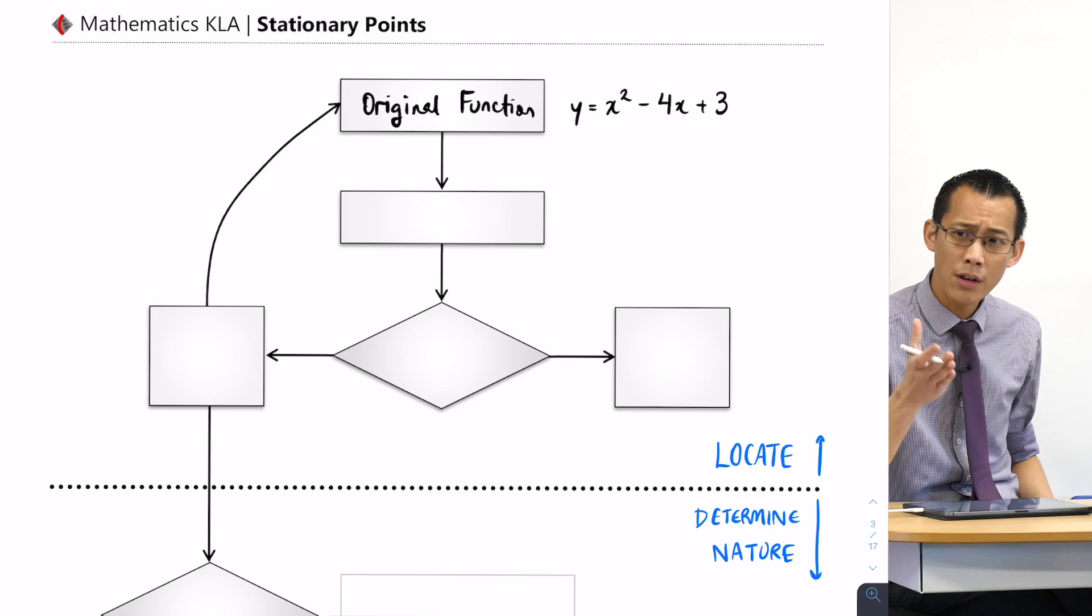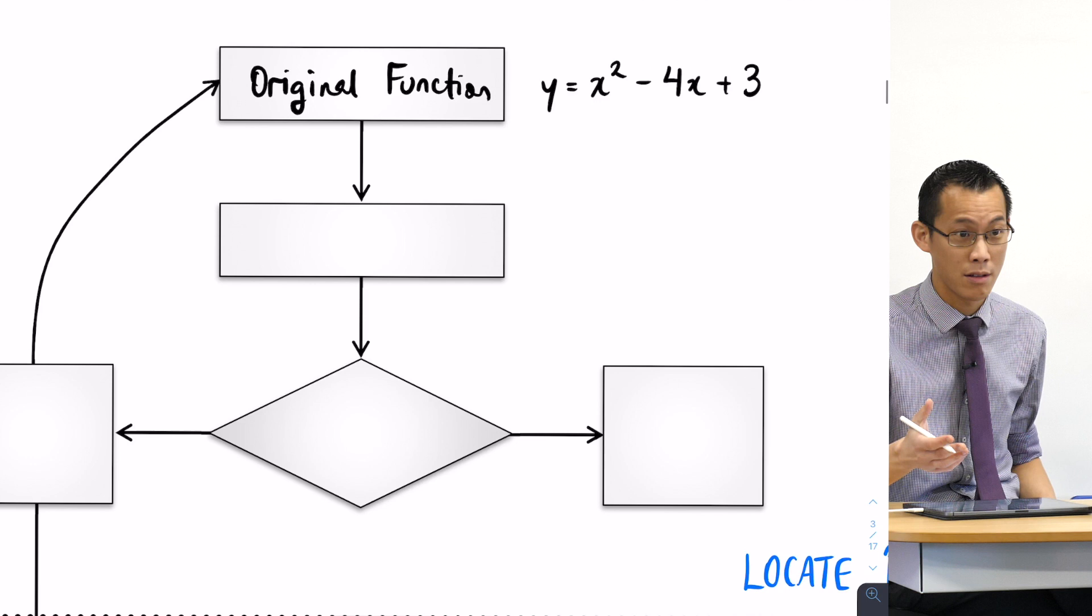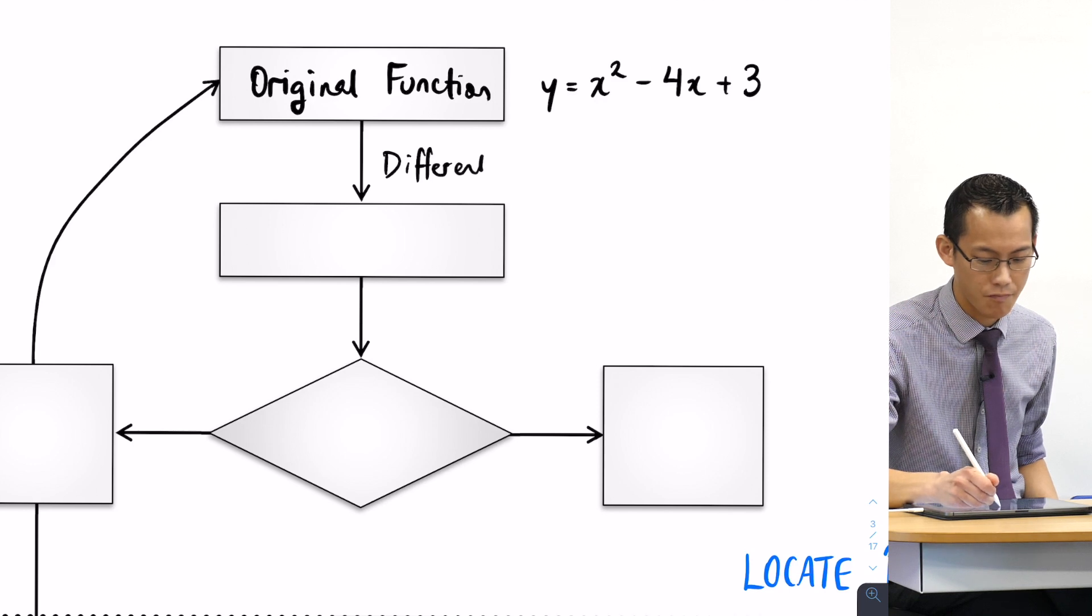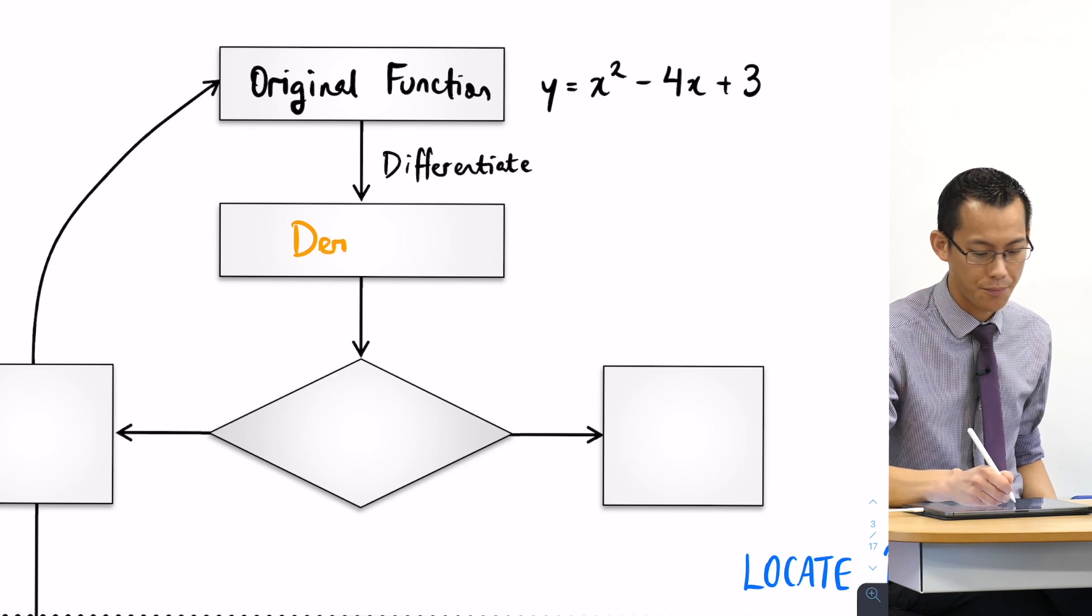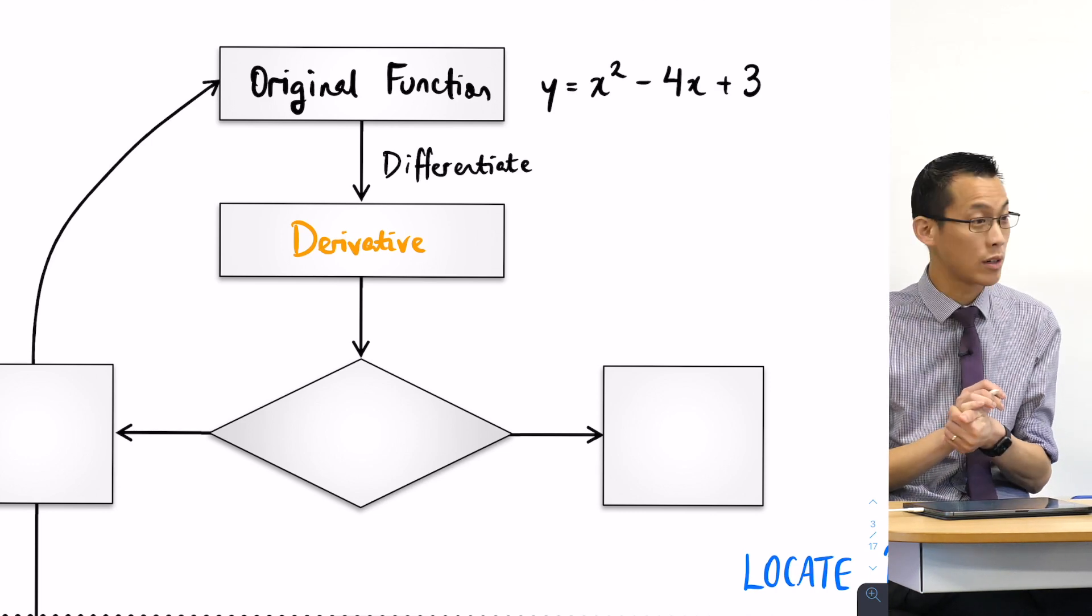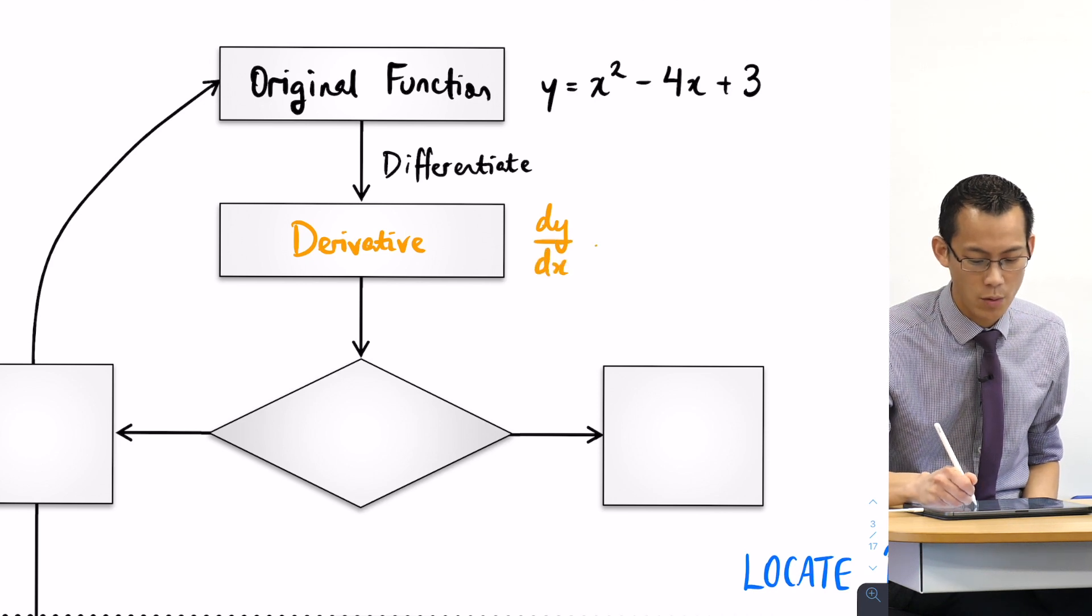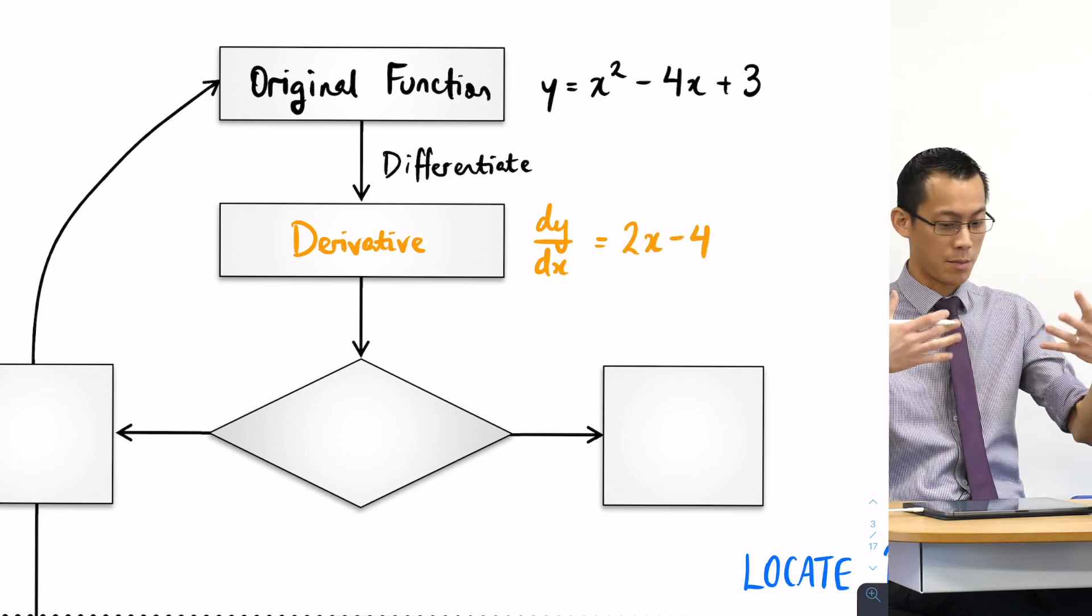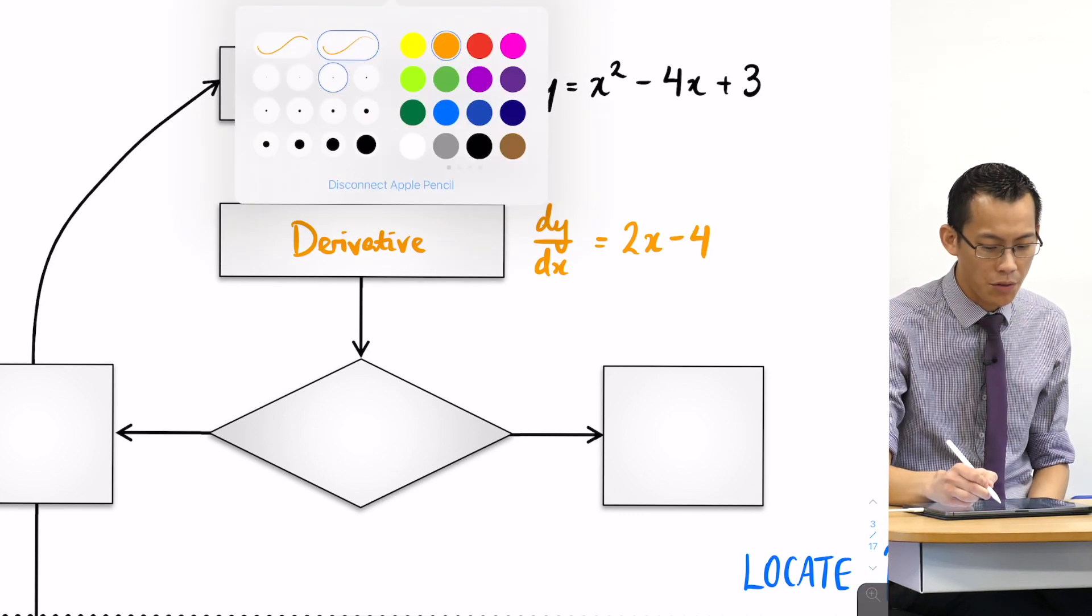If you know that you're looking for stationary points, the first thing that you have to do is differentiate. That's the first step. You differentiate, and what that's going to give you is the derivative. Let's go ahead and work out what the derivative of this particular function is. If I've defined the function as y, I'm going to go dy/dx and it's 2x minus 4.